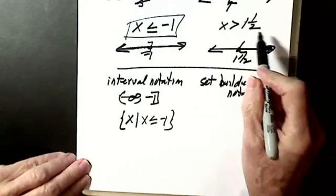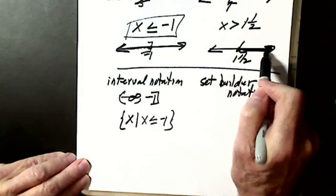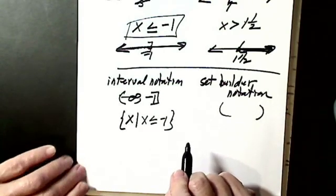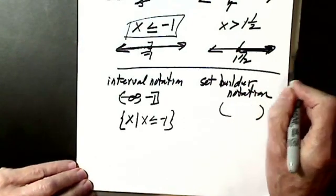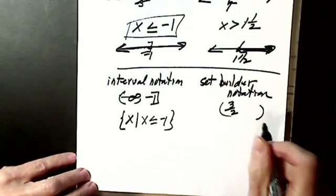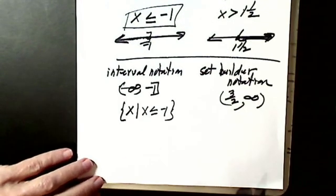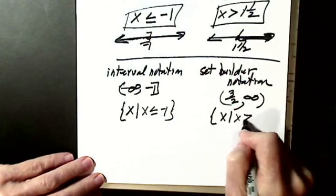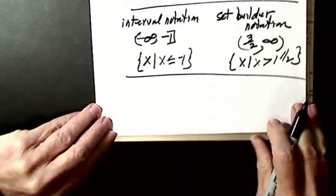Let's do x is greater than 1 and a half. In interval notation, it's parenthesis, parenthesis — no brackets in this one. Infinity is always parenthesis. It's smaller number to larger number, so my smaller number is 1 and a half, written as 3 halves, to infinity. For set builder notation, I have a brace, x such that x is greater than 1 and a half.